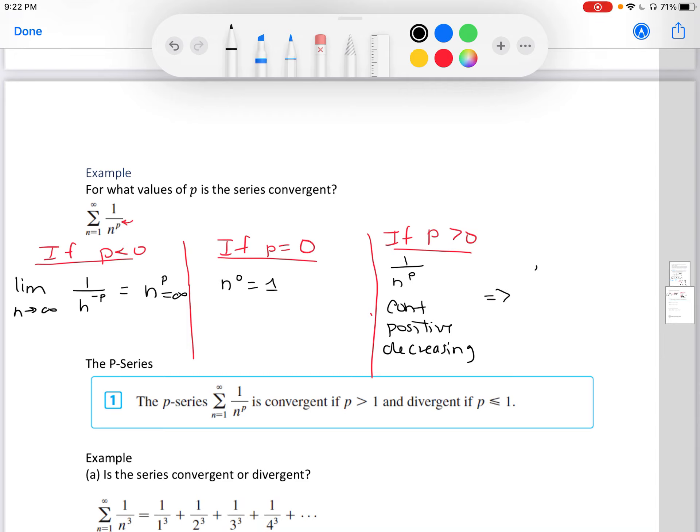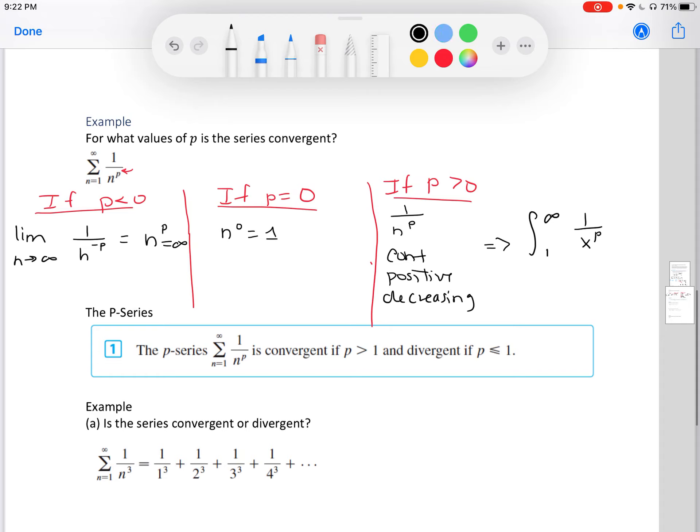So we can come up with the conclusion that the integral from 1 to infinity of 1 over x to the p converges if p is greater than 1 and diverges if p is less than or equal to 1.